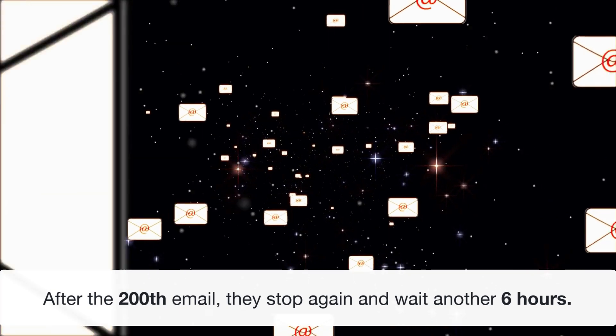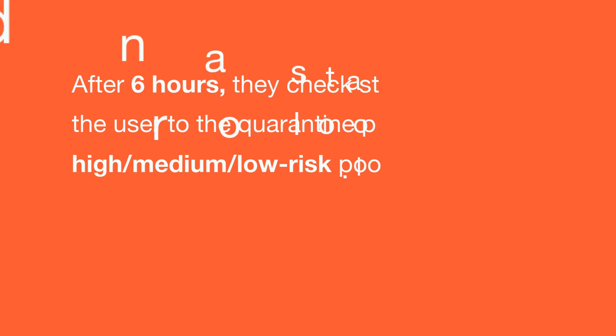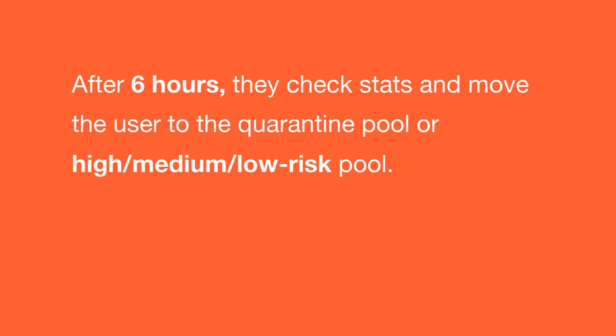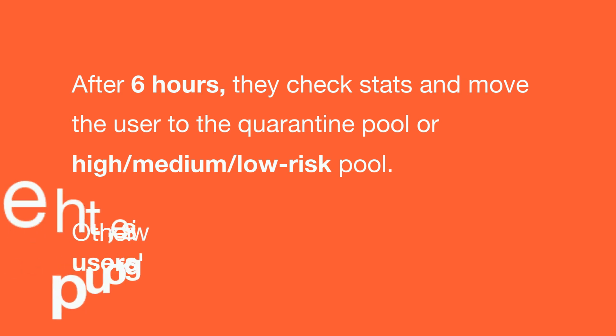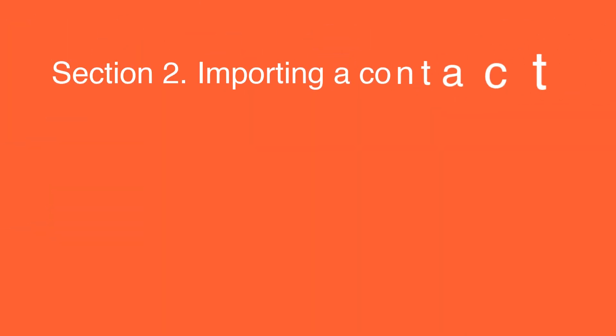After sending the 200th email, we pause again for six hours. Following the pause, we evaluate the statistics and determine whether to move your account to the quarantine pool — high, medium, or low risk pool — if you've sent over 500 emails and your account is older than 16 days, or keep you in the new users group.